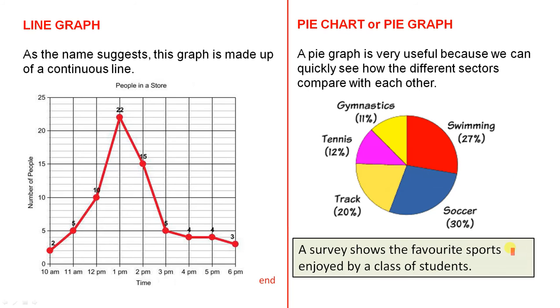So a survey shows the favourite sports enjoyed by a class of students. Now you can see that the largest sector is soccer, so that's the most popular. That was ahead of swimming, because that was 27%. So those two are very popular, but soccer was just a little bit more popular. The least popular sport was gymnastics, of course that was only 11%. And that was almost the same popularity as tennis.